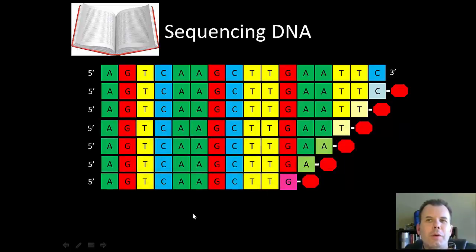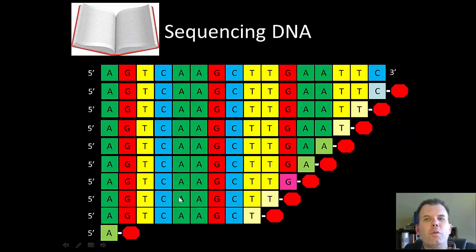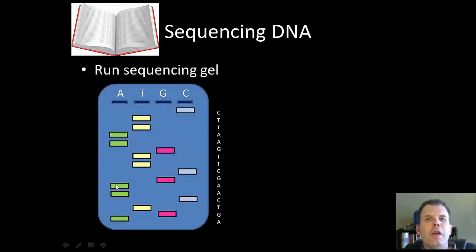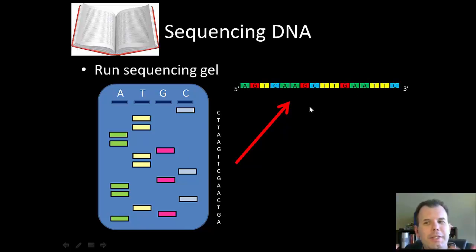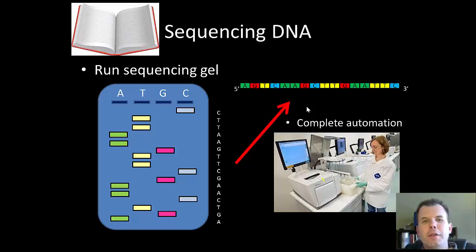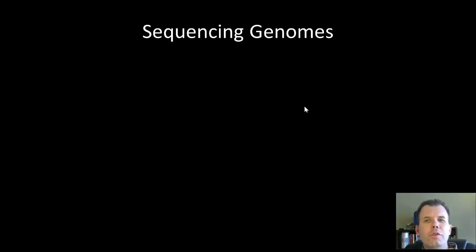We take all the different fragments made during sequencing, run them on a gel, and — remembering gel electrophoresis — the smallest fragments end up at the bottom and the largest at the top. Based on which color ends up on the gel or which lane they're in, you can tell the sequence. You can say this is an A, this is a G, this is a T, this is a C, and so on. What you end up with is the sequence. Now this process is completely automated — it used to be a painstakingly slow and laborious process, but now computers analyze thousands of base pairs within a couple of hours.